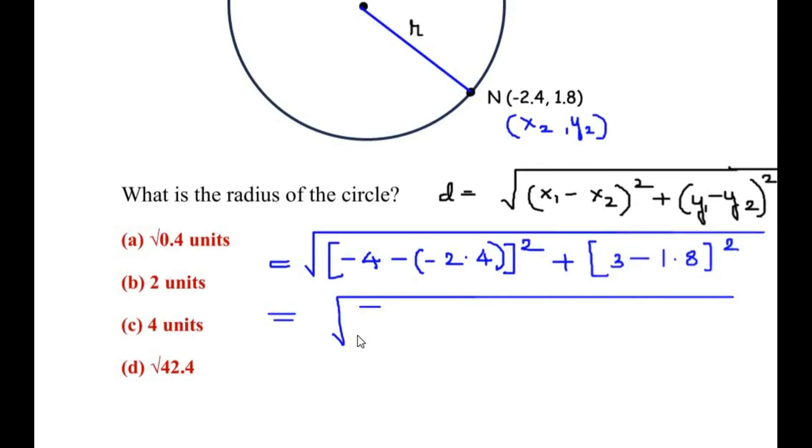Now here let us write the square root: [(-4) and negative of negative is positive 2.4]² plus [3 minus 1.8 gives you 1.2]².